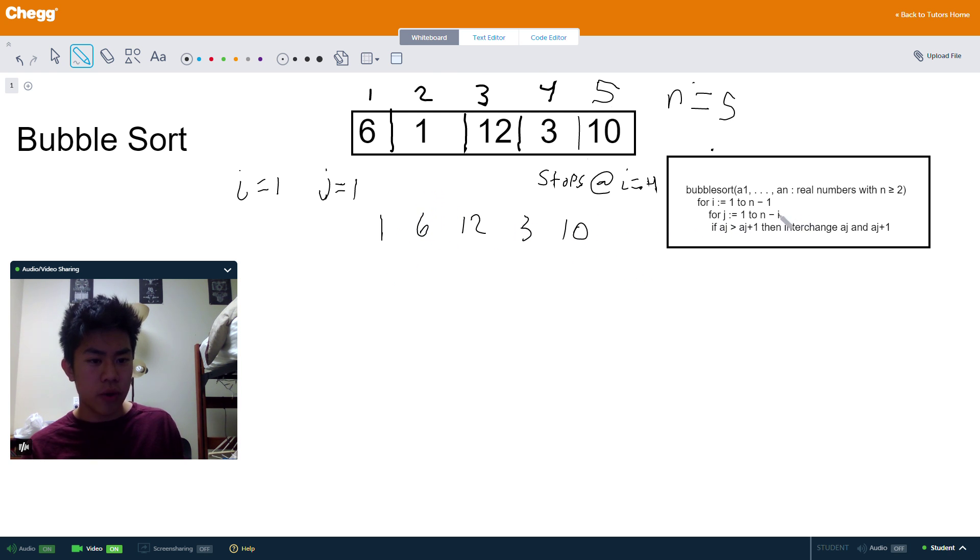And then it goes back to this for loop. It doesn't go to this one yet. It goes to this one. So then j becomes 2. j becomes 2. I swap these two. Now I'm checking a sub j and a sub j plus 1. So a sub 2 and a sub 3. Is this one greater than this one? No. No. Then we don't do anything to the list. We keep it as is.